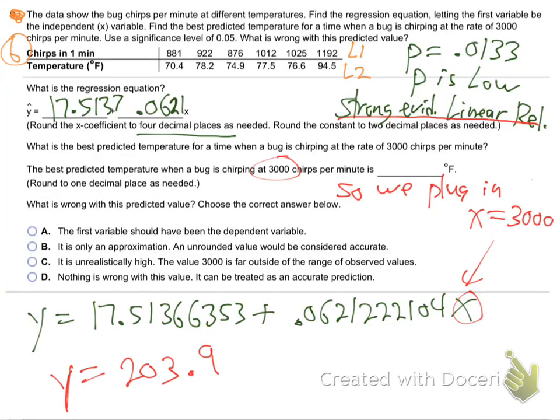I'm getting a Y value of 203.9 degrees Fahrenheit. So it's 203 degrees outside — is that very realistic? No, it's unrealistically high. Why? I thought there was strong evidence that this was a linear relationship.